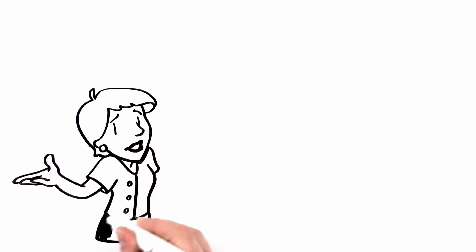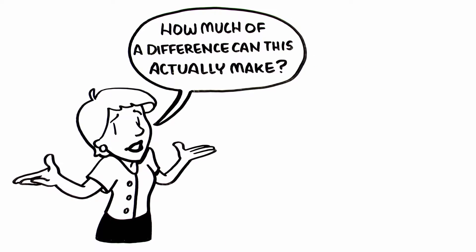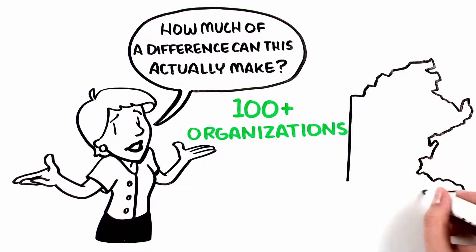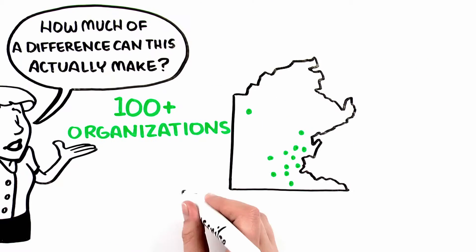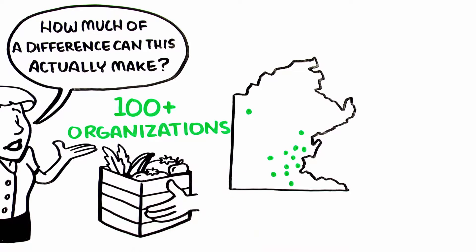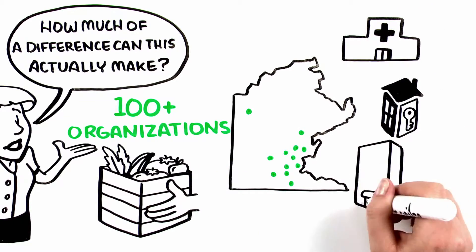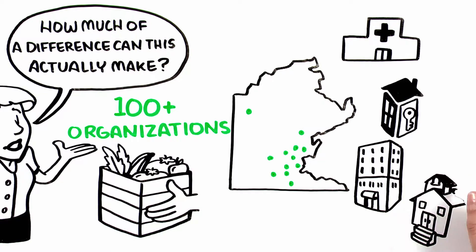You might be wondering, how much difference can this actually make? We're currently working with over 100 organizations in 12 cities in and around Boston. If you have a favorite service organization, chances are pretty good we're bringing them food. Like Boston Medical Center, Pine Street Inn, St. Francis House, or the Cambridge Public Schools.